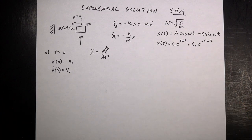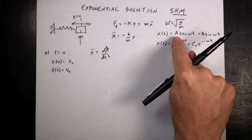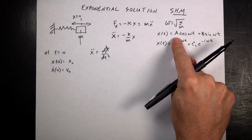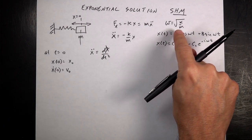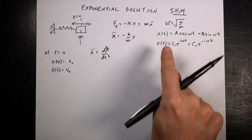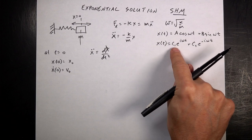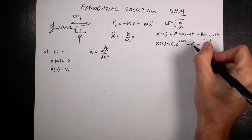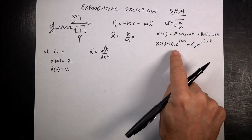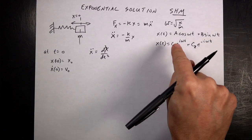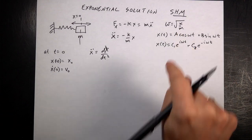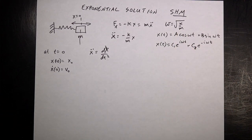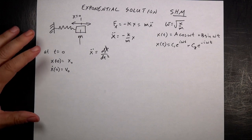I'm going to do a few things: find the coefficients A and B for the trig solution, find the coefficients c1 and c2 for the exponential solution, and then show how the exponential solution is the same as the trig solution using the Euler equation. That's a lot of stuff, but let's just do it.